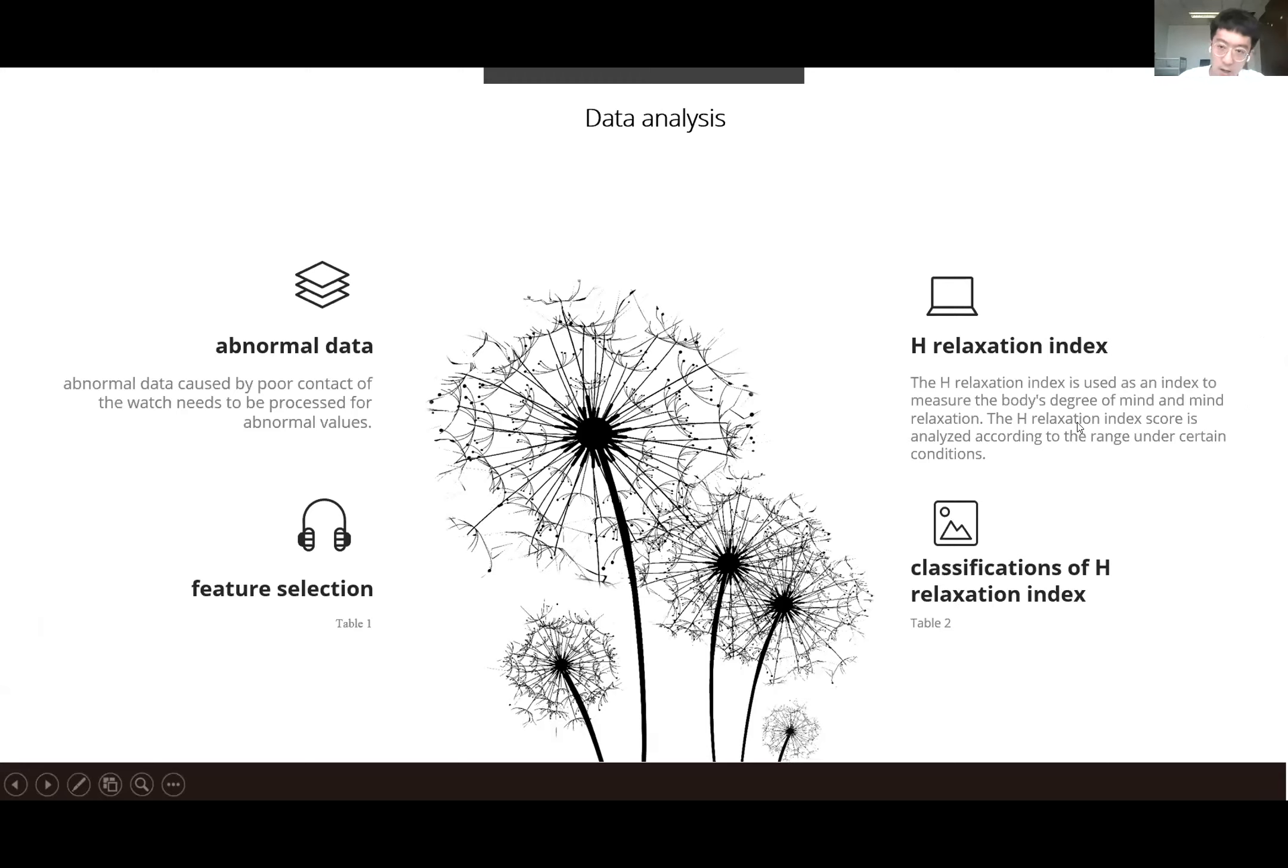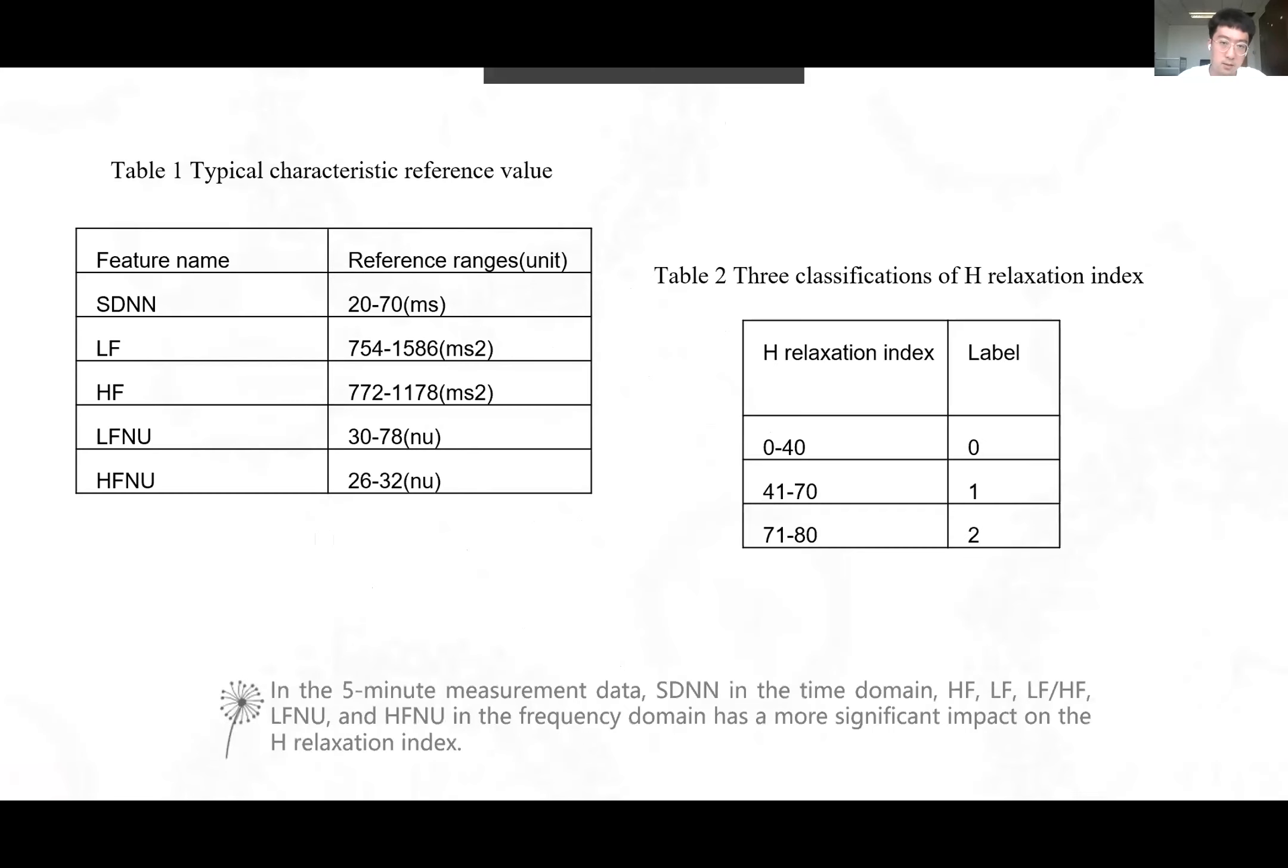This is the explanation of the H-relaxation index. The H-relaxation index is used as an index to measure the body sequence of mind and body relaxation. This is table one and table two. Table one, typical collected realistic reference value in the five-minute measurement data. And table two is the three classifications of H-relaxation index.